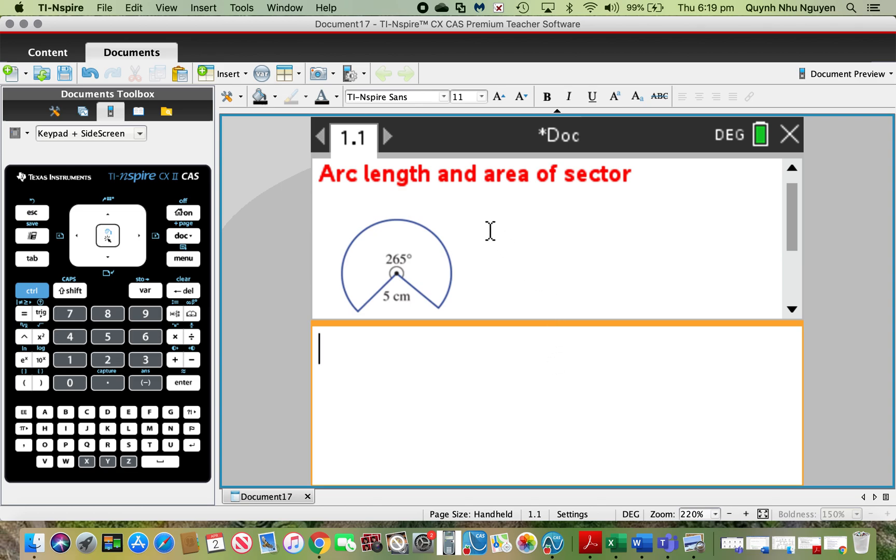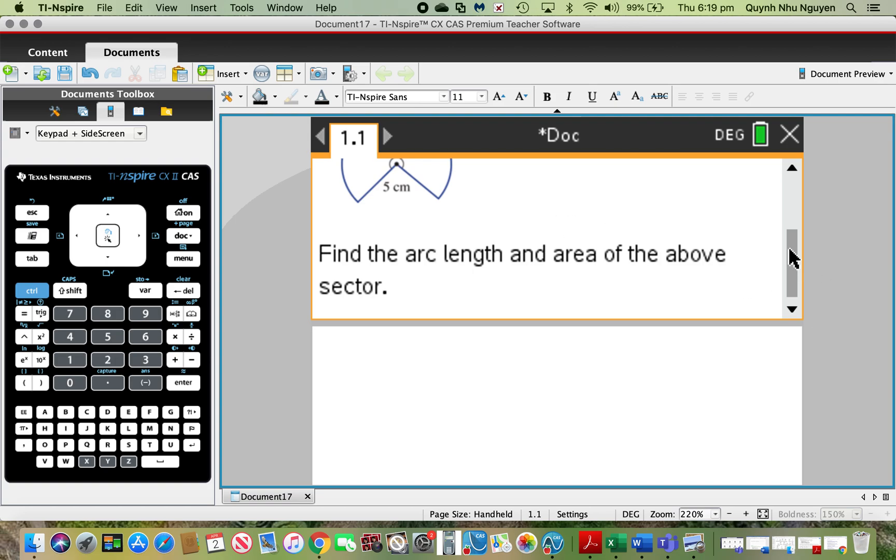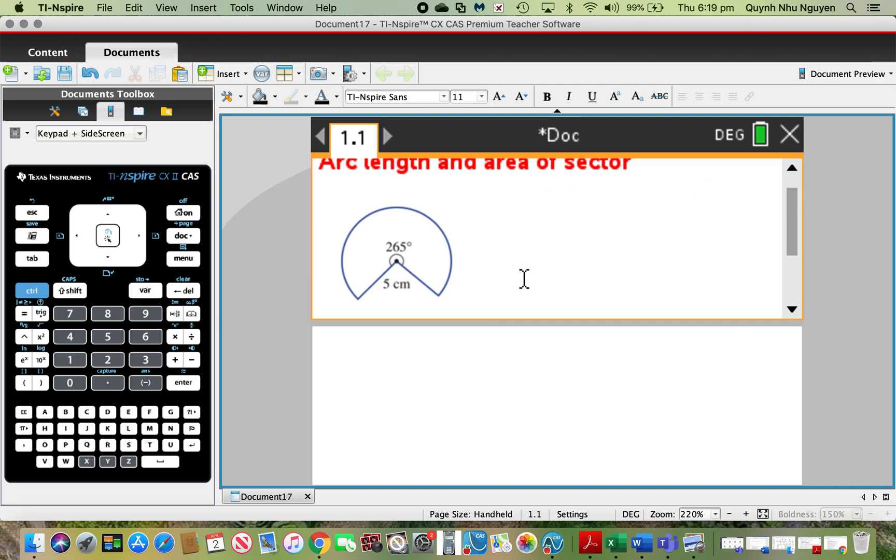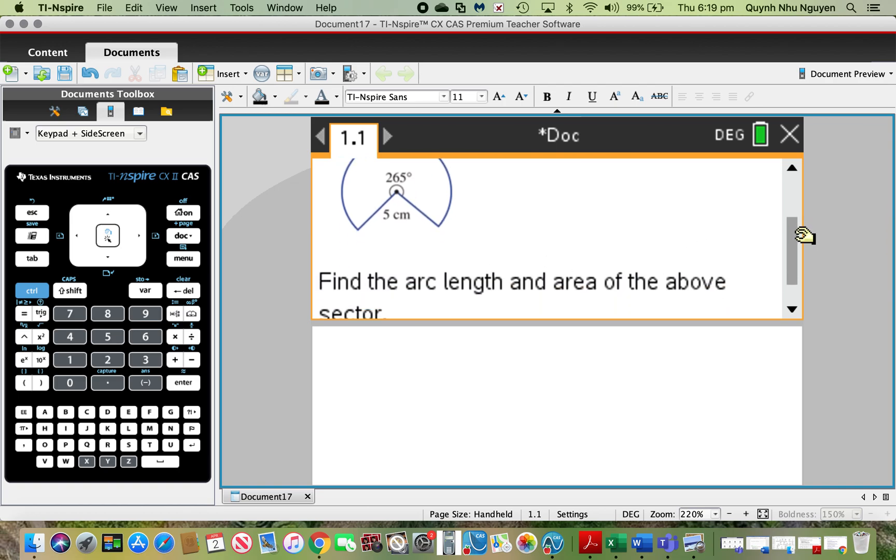I'm going to be using this question up here to create our template. You're given a sector with an angle of 265 degrees and a radius of 5 centimeters. We need to find the arc length and the area of this sector.